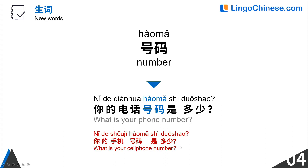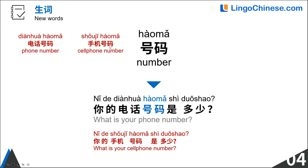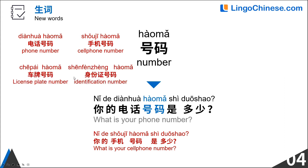你的手机号码是多少? 你的电话号码是多少? 电话号码 means phone number; 手机号码 means cell phone number; 车牌号码 means license plate number; 身份证号码 means identification number.